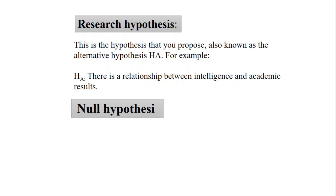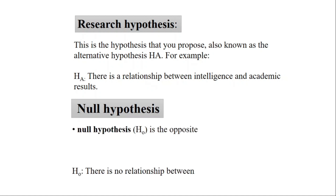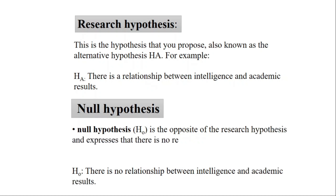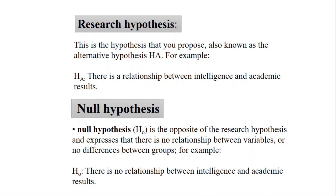The null hypothesis, denoted by H0, is the opposite of the research hypothesis and expresses that there is no relationship between the variables or no difference between groups. For example, H0: there is no relationship between intelligence and academic results. So in step one, you define both the alternative hypothesis and the null hypothesis. To prove your research hypothesis, you devise a null hypothesis stating the opposite.